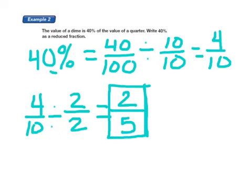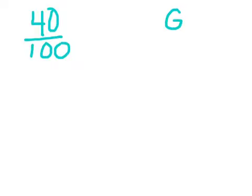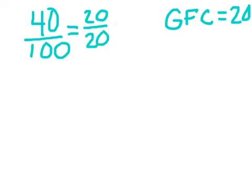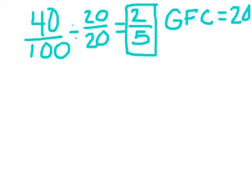But if I take 40 one-hundredths, I know that the greatest common factor of 40 and 100 is 20. So I can divide this by 20 twentieths in one step. Though we need to make this a division sign, not an equal sign. So 40 divided by 20 equals 2. 100 divided by 20 equals 5. And there is my answer.